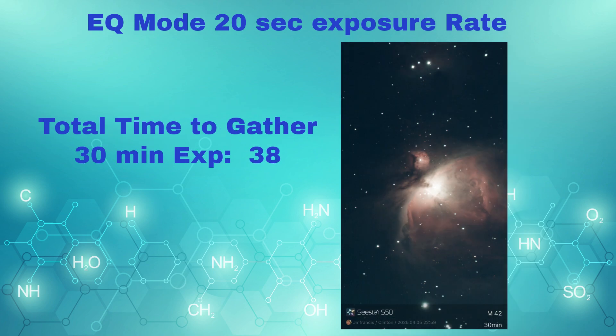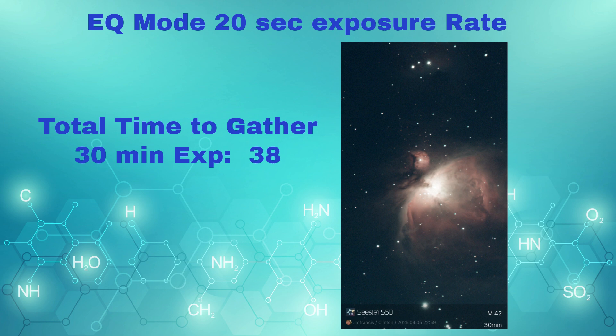This is our third image of the night, taken in EQ mode at the 20-second exposure rate. It took 38 minutes to gather 30 minutes worth of exposure time on this one — a little bit less time than the previous one and the Azimuth mode. So it was able to keep almost all of the exposures it captured, and that's a pretty good rate of return. Again, as a reminder: EQ mode, 20-second exposure rate, image number three. We have one more to go to compare.